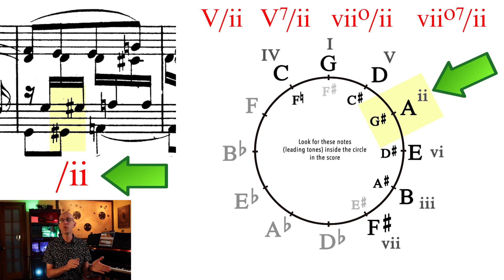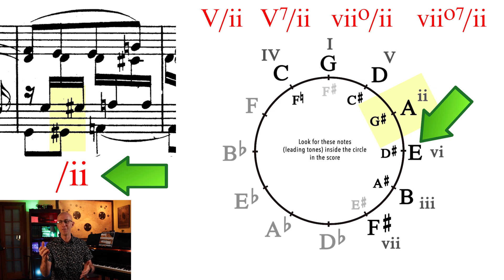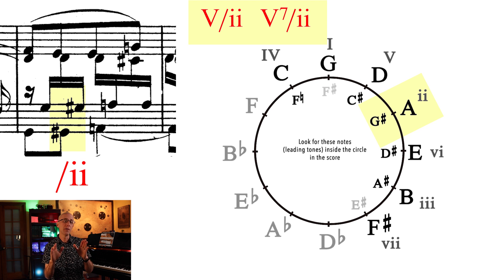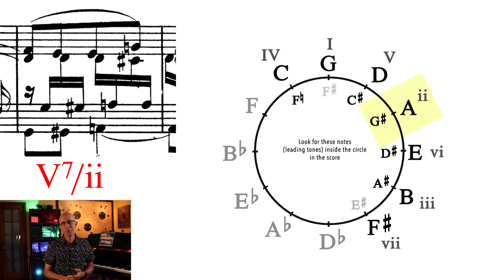Now, it could be the 5 of 2, or the 5 7 of 2, or the 7 diminished, or the 7 diminished 7 of 2. The only thing you have to do to figure this out is to see if the next note in the circle moving clockwise appears in the chord. That would be E in our case. That's because the next note in the circle is always the 5 of the previous note. Remember, this is the circle of fifths. So is there an E in this chord? Yes, there is. So it's either a 5 of 2 or a 5 7 of 2. And there's a D right here. So that means this is an E 7. So this is a 5 7 of 2. Of course, it's an inversion because the lowest note is not an E, it's a G sharp. So we write 5 6 5 of 2.